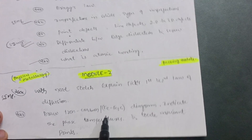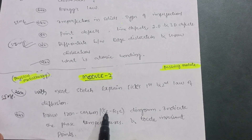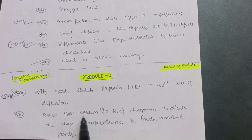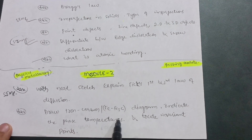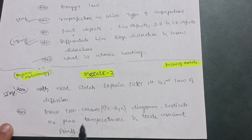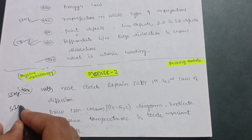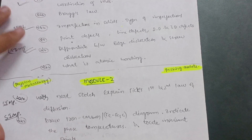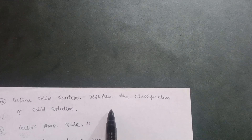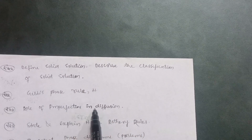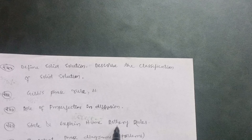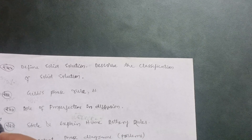Draw the iron-carbon diagram — sometimes given in short form as Fe-Fe3C diagram — indicate the phase temperatures and locate invariant points. This is also a super important question in Module 2. Then, define solid solution and describe the classification of solid solutions. You should also have knowledge of Gibbs phase rule, the role of imperfections in diffusion, and state and explain Hume-Rothery's rules, which is also super important.